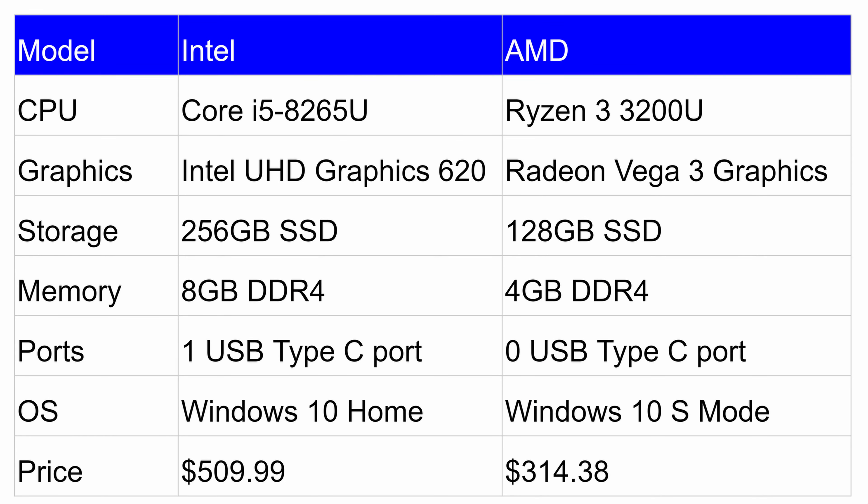So let's take a closer look at the Intel and AMD versions. It's not just the processors that are different — there are a whole bunch of subtle differences between these two configurations. If you look at this chart, obviously the CPUs are different. The Intel one is the Core i5-8265U whereas the $300 version uses the Ryzen 3200U processor.